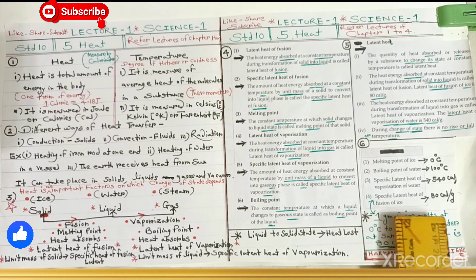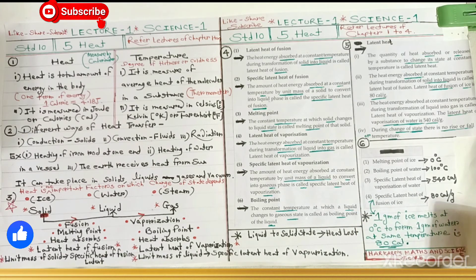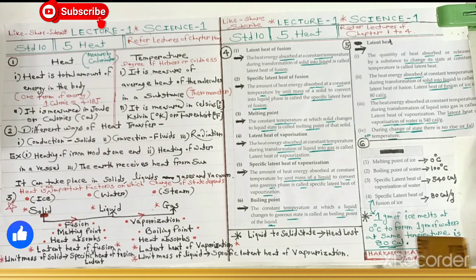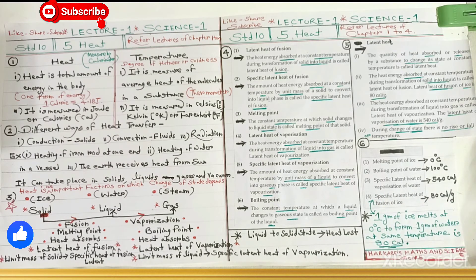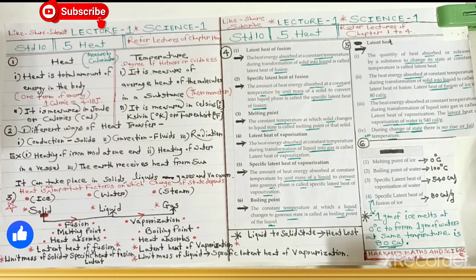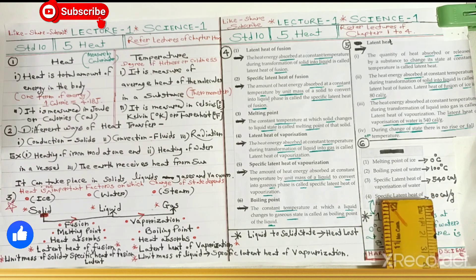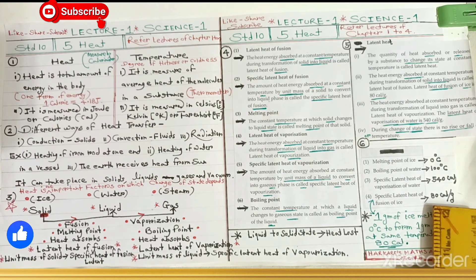Specific latent heat of vaporization of water is 540 calories per gram. Specific latent heat of fusion of ice is 80 calories per gram. The meaning of 80 calories per gram is: to melt one gram of ice at zero degrees to form one gram of water at the same temperature, 80 calories of heat must be supplied.